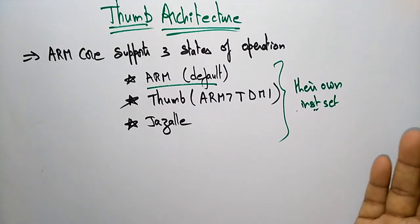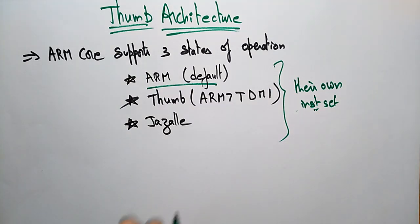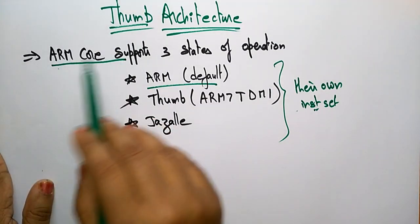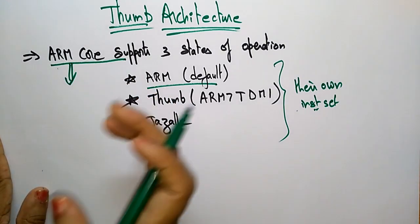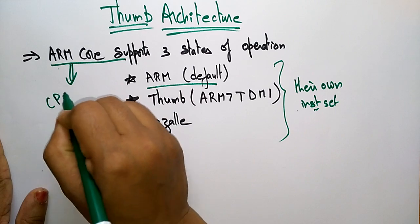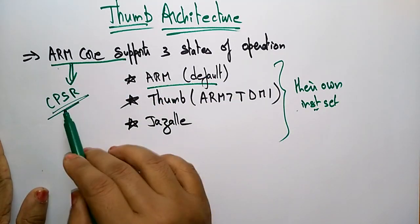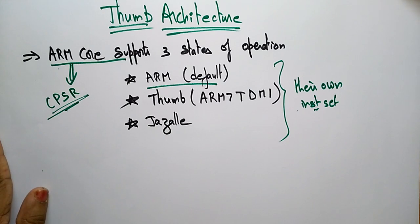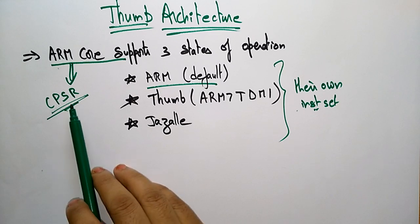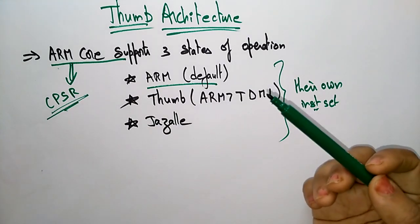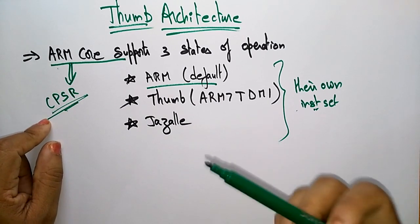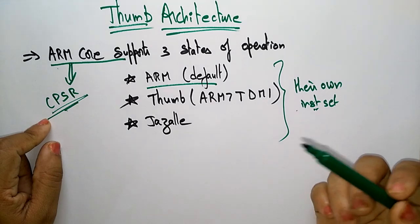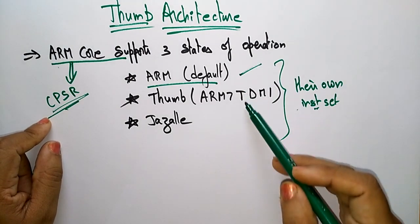Choices can be made with the CPSR as usual. Because we are using the ARM core, this ARM core uses the main register set — that is the CPSR. With the help of the CPSR you can make a choice. CPSR is nothing but the Current Program Status Register. In that Current Program Status Register you need to make some choices, and based on those choices we can select ARM, Thumb, or Jazelle.